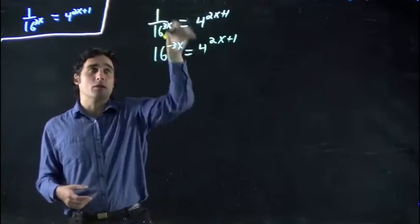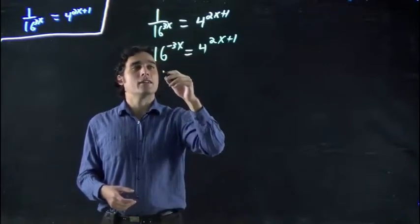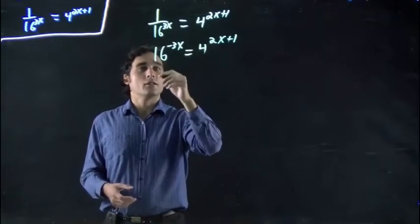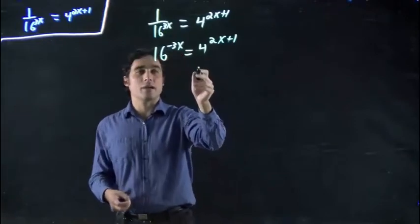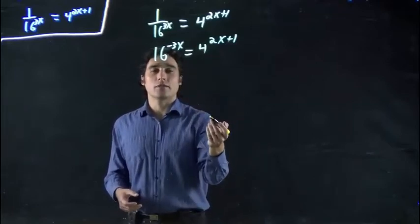Any time you have things on the bottom, you can flip them to the top by putting the exponent negative. Or vice versa. If I had it on top, want to get it to the bottom, put a negative. So, this is the same as that. This line is the same as the previous line. And now, we've got to think, I want these to be the same base. I can put them both to the base of 2, but 16 can also be put to the base of 4.